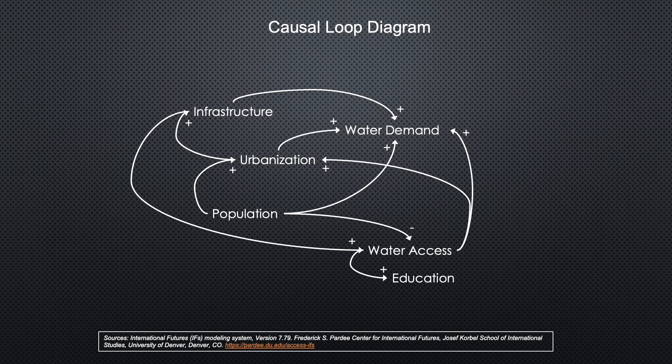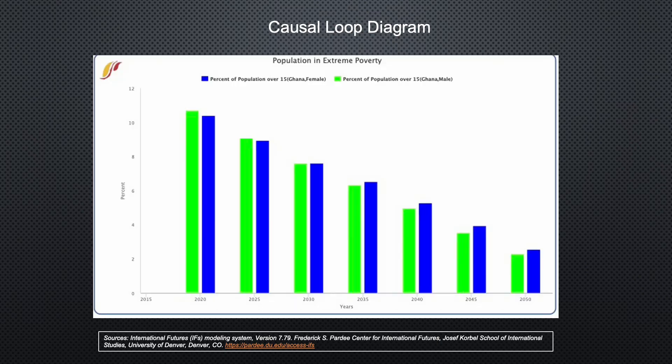Education can help reduce the poverty rate in Ghana. The percentage of people in Ghana over the age of 15 living in extreme poverty will decrease steadily from now until 2050. One of the third-order effects of increasing access to water appears to be a decrease in extreme poverty. As people require less time to seek water sources, they can improve their education and provide better for themselves. This trend highlights the importance of developing safe water infrastructure in urban areas and how critical it is to establish safe water access in rural villages. While the projection shows a continual decline in extreme poverty through 2050, 2% of 50 million people is still a million people in extreme poverty.